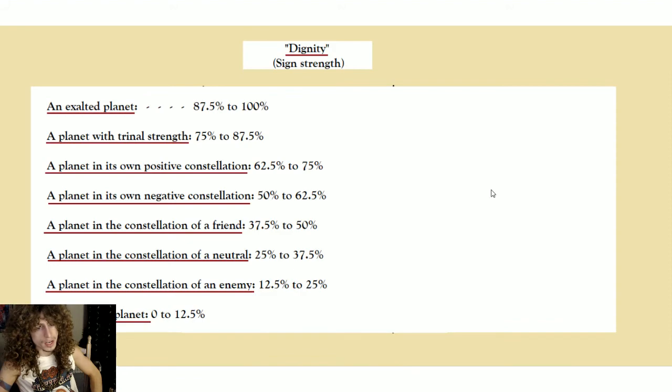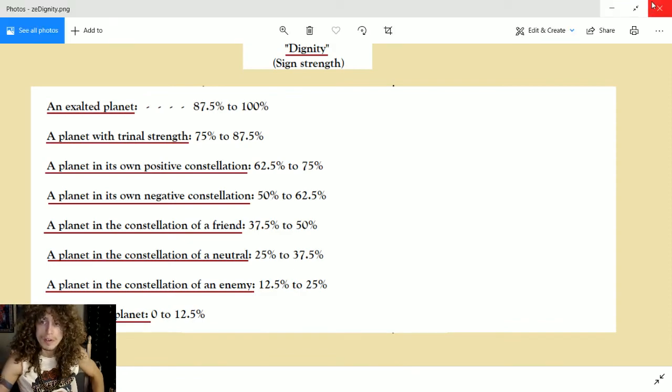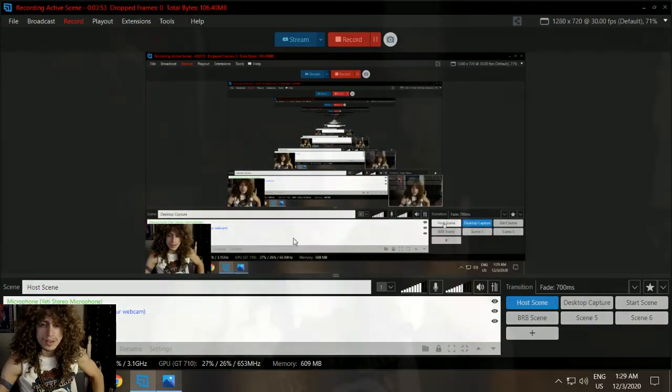And then the debilitated planets have 0 to 12.5% strength. So this is a description of planetary strength and dignity by their sign, by the sign that they're in. That was sort of a cap on everything we've learned so far in terms of planet strength in the sign.